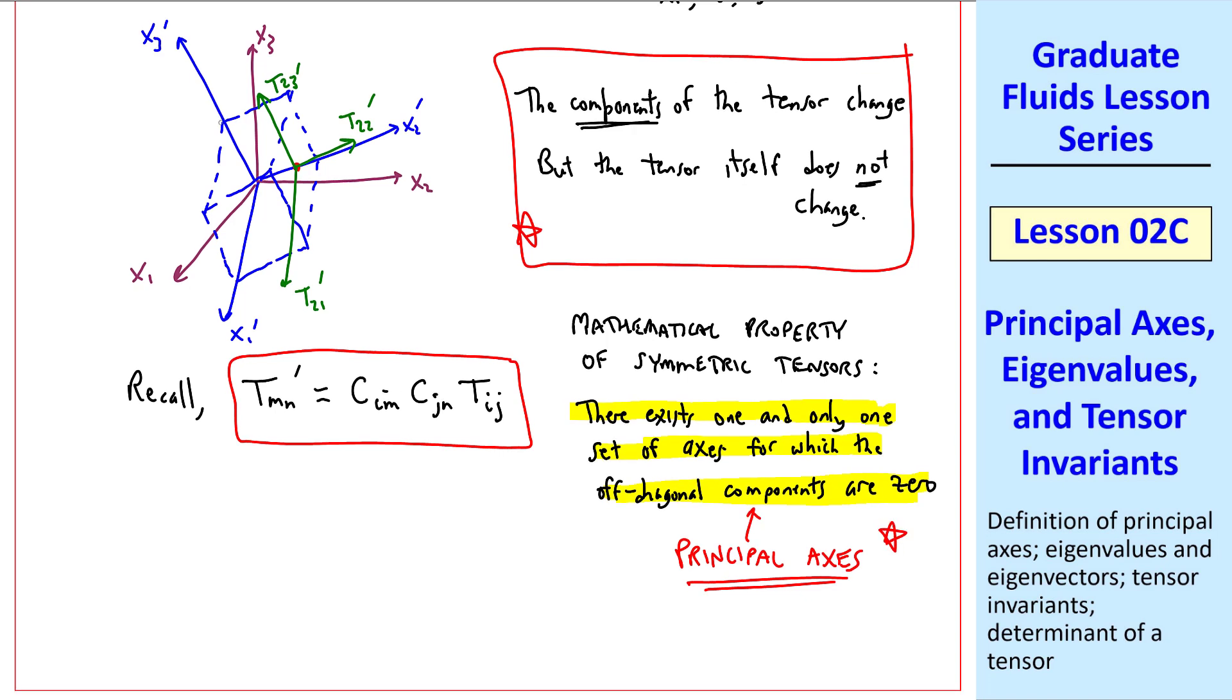Imagine rotating these axes around arbitrarily until you reach a certain rotation where all the tangential components go to zero and all you're left with are normal components. The components on this face reduce to just one component, T22'. On this face, it's T33', and on this face, it's T11'. In other words, there are three normal components, but all these tangential components have disappeared. This is a very special orientation of the axes, and this is what we mean by principal axes.